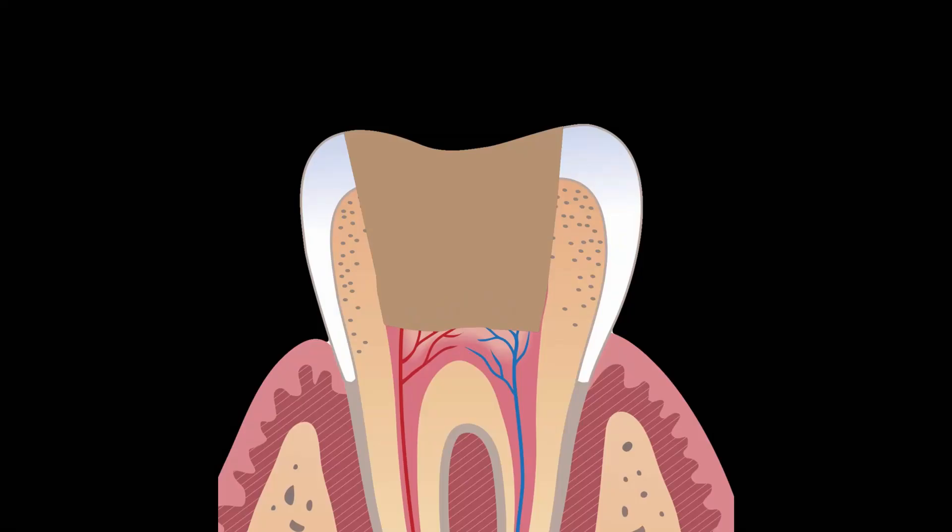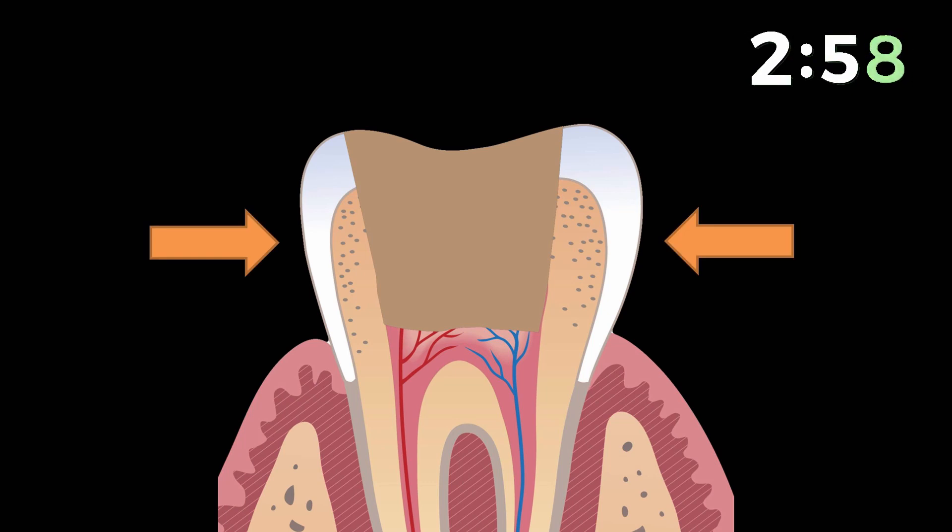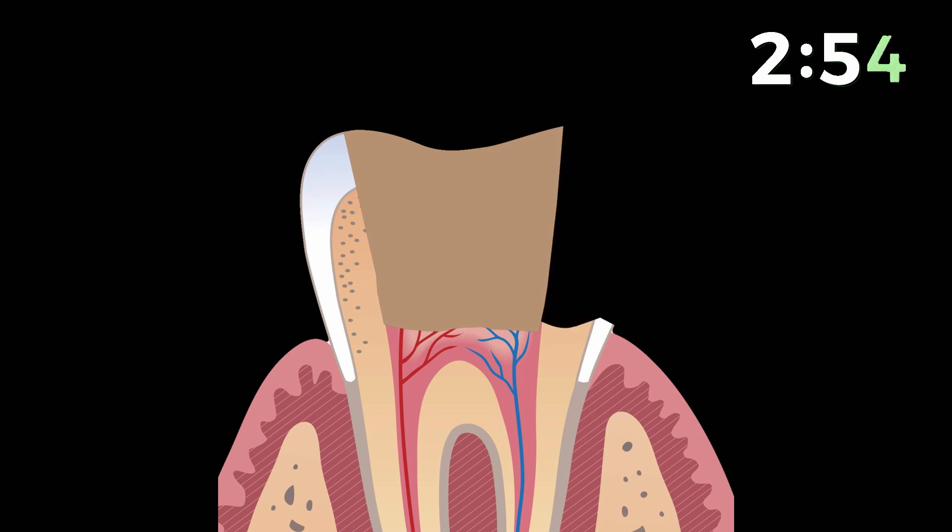In a traditional access cavity preparation, there is an excessive removal of sound tooth structure which leaves the walls of the tooth preparation weaker. Once the tooth is functional in the oral cavity for a longer time period, one or more of the walls may fracture, compromising the success of the tooth in the oral cavity.